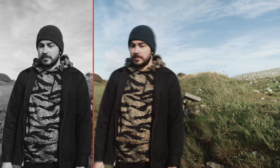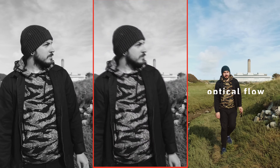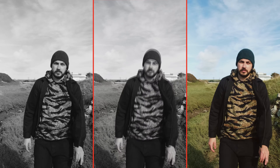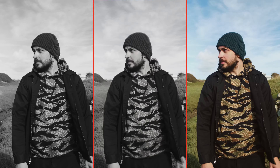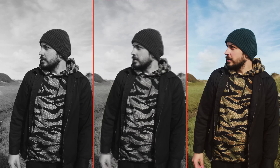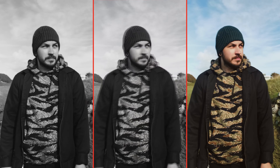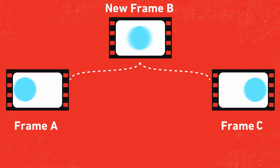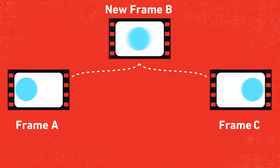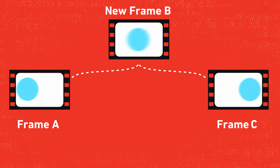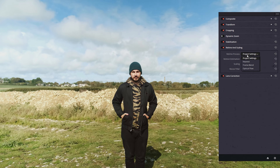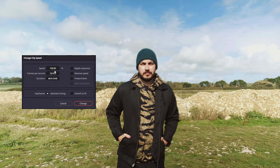Optical flow, which is what we're going to look at today, uses motion estimation to generate new frames from the source. Essentially, the software interpolates the missing frames by analyzing and comparing the relative pixel data from the preceding and prior frame to create what it would assume is there.